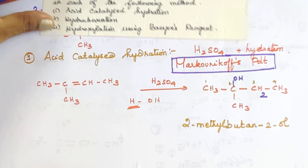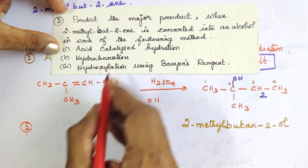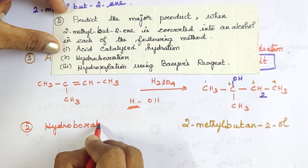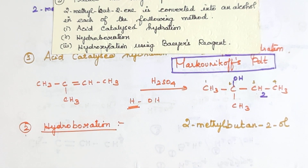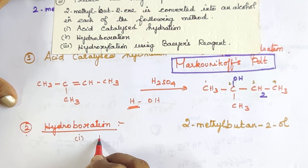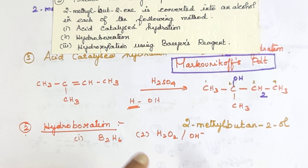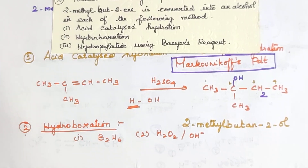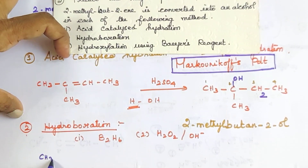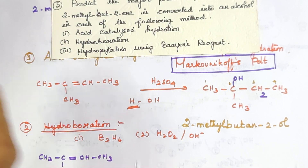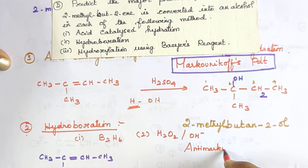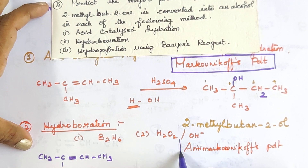Moving to the second reaction: hydroboration-oxidation. This involves two steps — first, addition of B₂H₆, and second, treatment with hydrogen peroxide and base (H₂O₂/OH⁻). Overall, this is a hydration reaction, but crucially it follows anti-Markovnikov's rule.